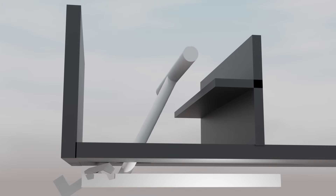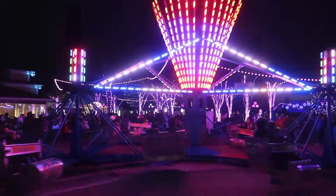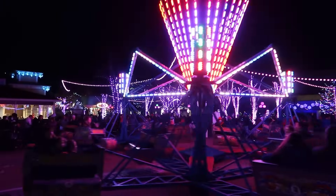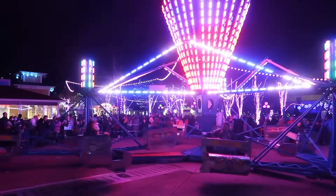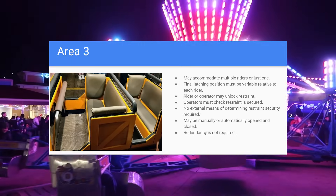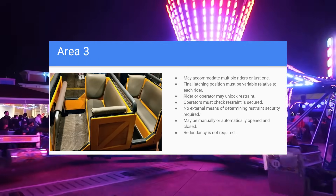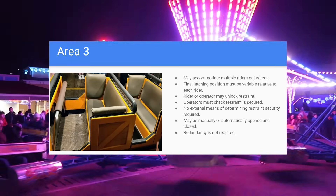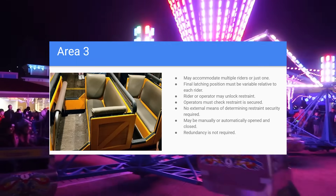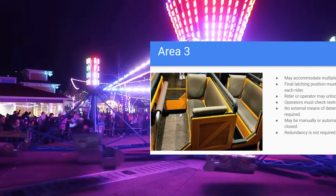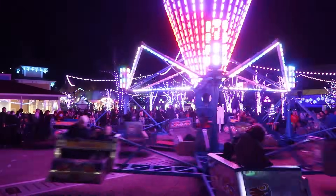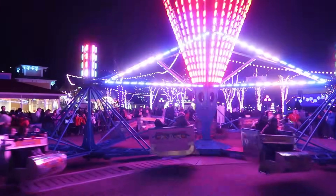Area 3 steps it up a little bit, with most of the same requirements as Area 2, except that these restraints must be capable of locking in multiple positions relative to the rider, and that operators must check that the restraints are secured in some way. Think of the large adjustable lap bar on Big Thunder Mountain Railroad for example.